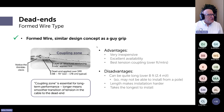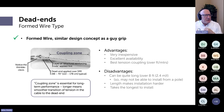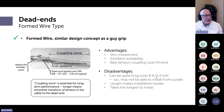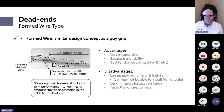The general advantages of formed wire dead ends are that they're very inexpensive, have excellent availability, and provide the best tension coupling — a good long coupling zone that is gentle on the cable. The disadvantage is that on very strong, long-span ADSS cables — especially with a tracking resistant jacket — the dead end can exceed eight feet, making installation difficult. You may need a bucket truck rather than just working from a pole, which increases time and cost.